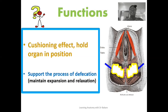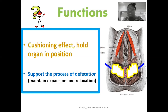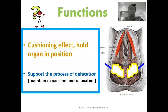Another function is to support the process of defecation. During defecation, the anal canal undergoes some form of expansion and relaxation. This process needs to be controlled to prevent damage to the anal canal. The ischioanal fossa helps to control this by maintaining the process of expansion and relaxation during defecation.